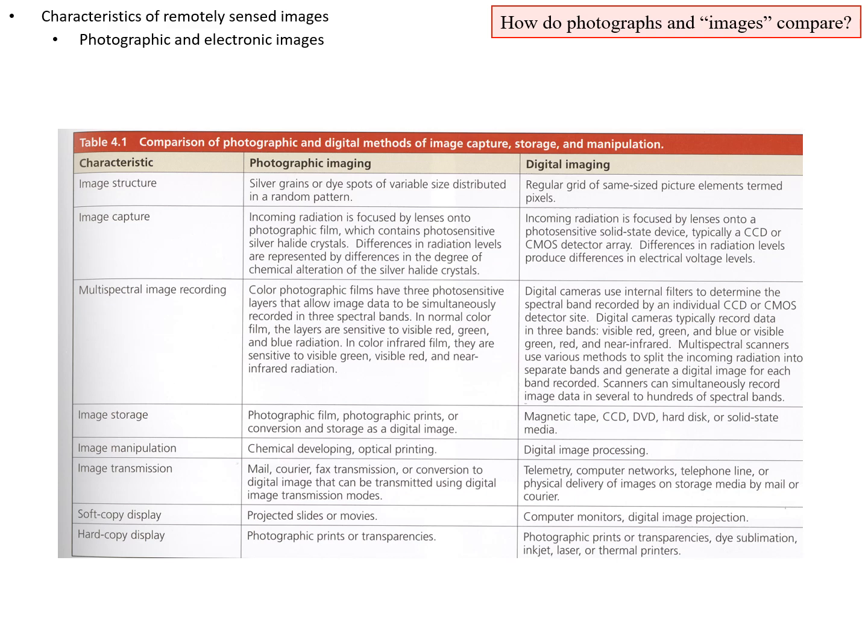The differences between photographic imaging and digital imaging: the image structure of a photo is created by silver grains or dye spots that, at a microscopic level, are randomly distributed. A digital image uses a regular grid of picture elements that are all the same size, called pixels.